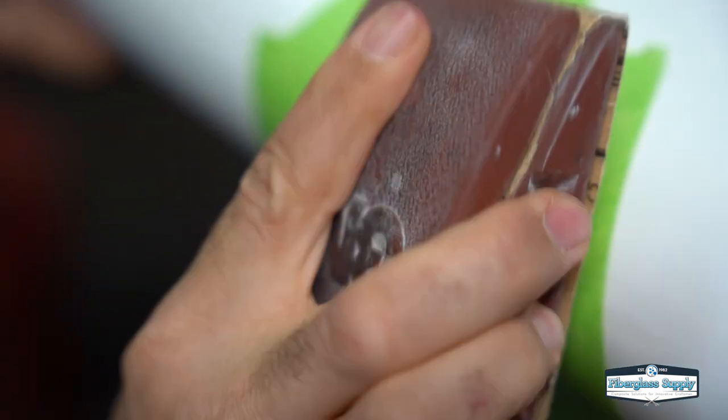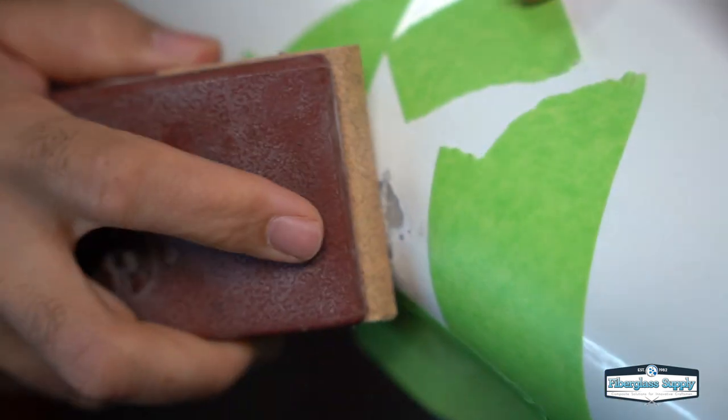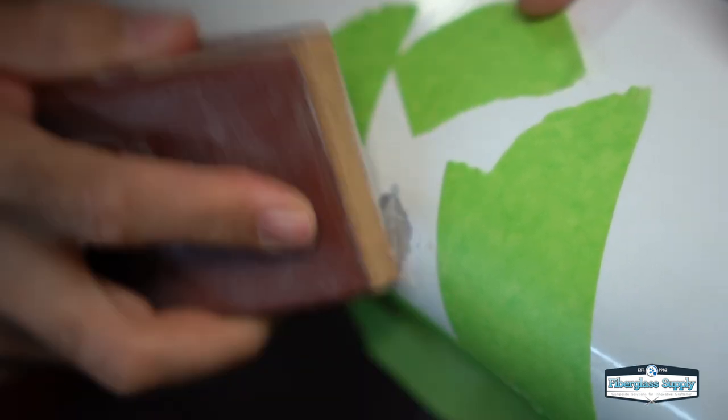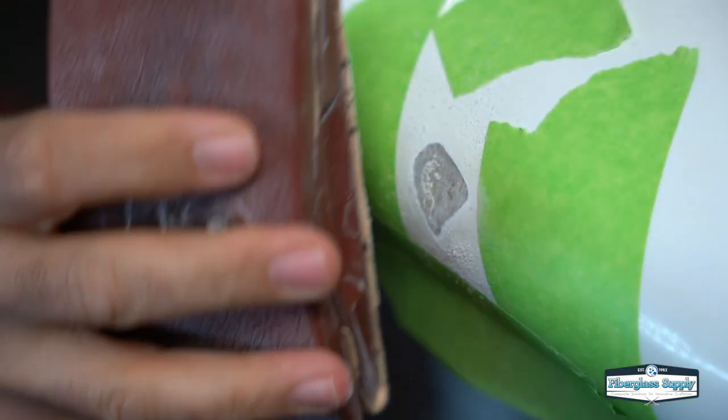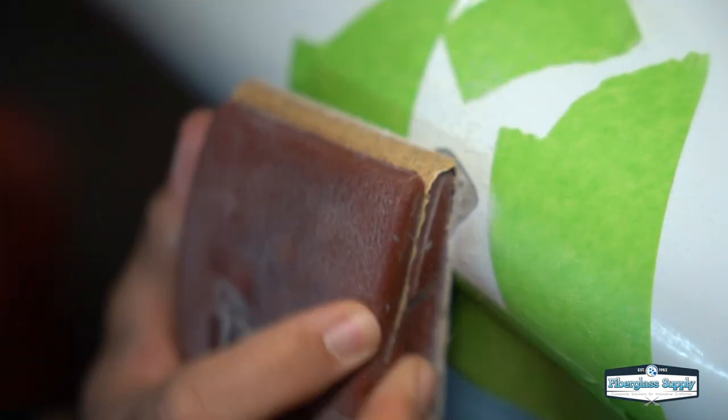So once we have that masked off, we're going to start in there typically with like a 60 or 80 grit sandpaper. And we're going to sand out the bad area and feather it out so that it tapers down to the bottom of that groove. The tapering will give us some surface area to bond our fiberglass to and it will allow us to shape that into an oval so we've got a nice shape to cut our patches to.